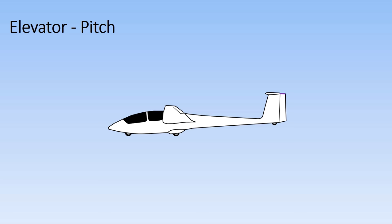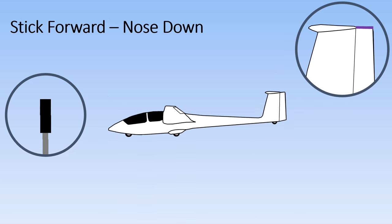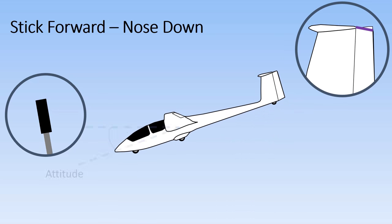First, let's look at how the elevator controls pitch. I've highlighted the control stick and the elevator. Moving the stick forward lowers the nose. We call this a nose down attitude.